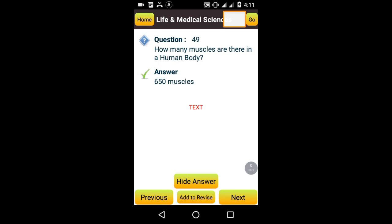How many muscles are there in human body? 650 muscles.